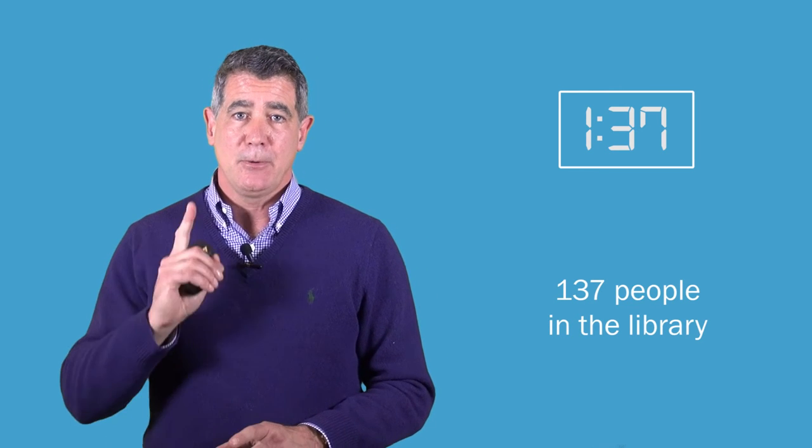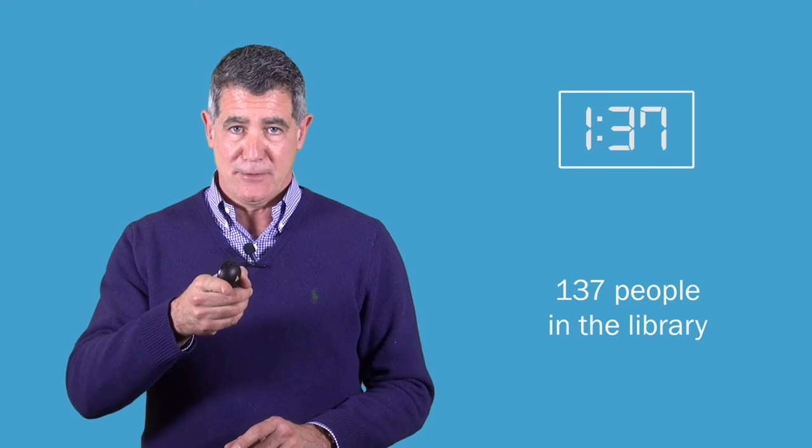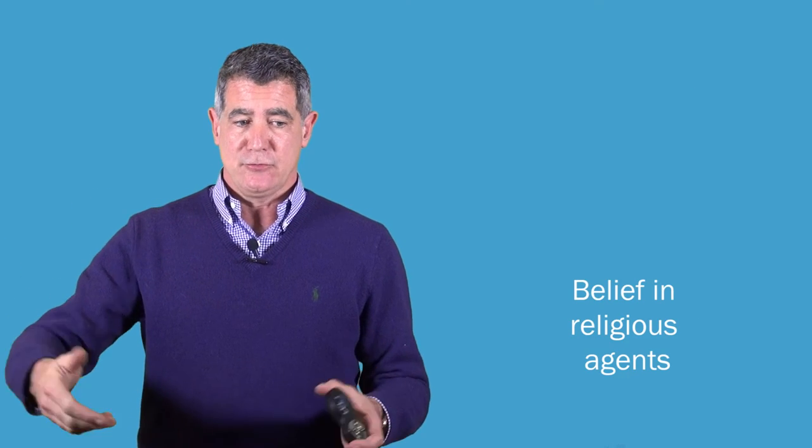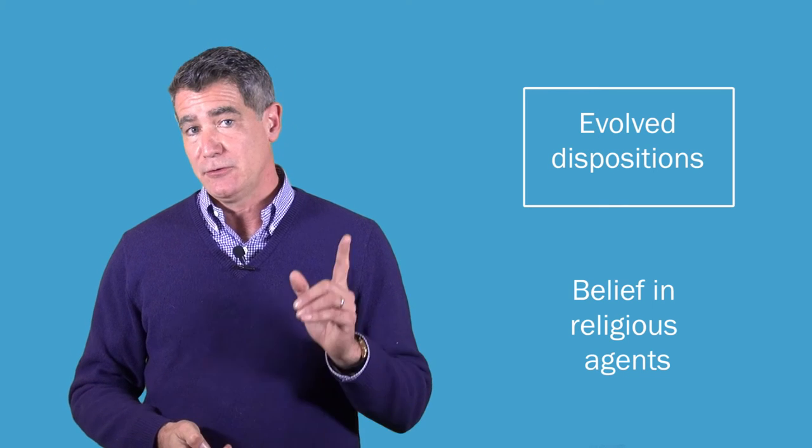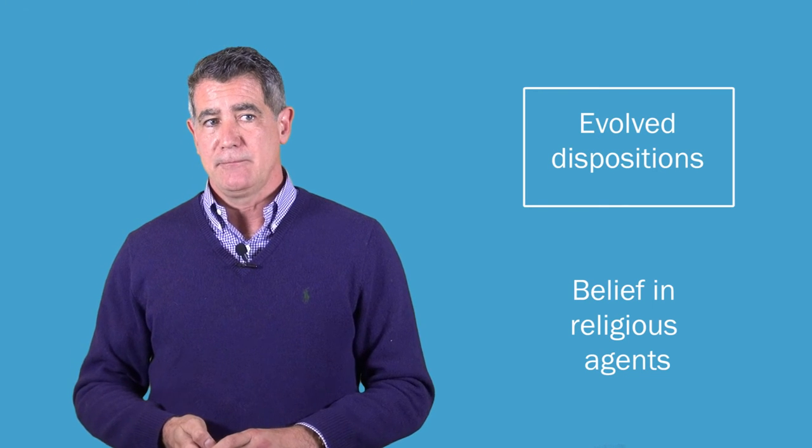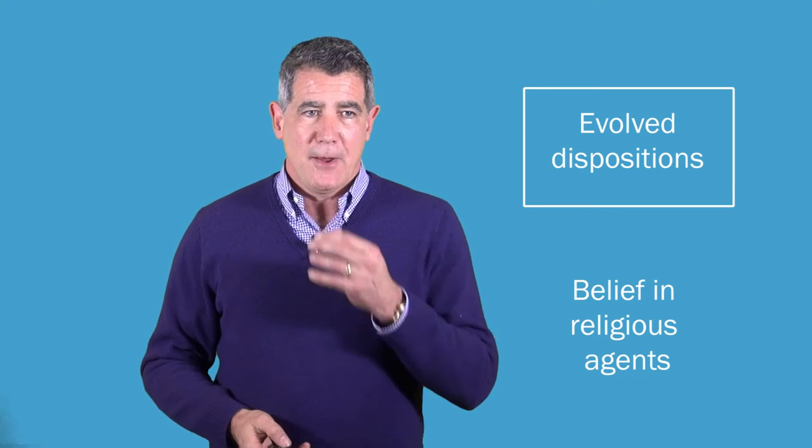But some argue that it's not a matter of reasoning to the falsity of religious belief here. It's a matter of showing that it's unjustified. That is, you've come to hold these beliefs in a way that's not justified. So when you look at the watch and it says 137, well, there might be 137 people in the library, but you shouldn't think it. You shouldn't think it on those grounds. And in the same way, if you came to believe in these religious agents on the basis of these evolved dispositions, you shouldn't believe that either. That's unjustified. So is that correct? Well, maybe or maybe not.